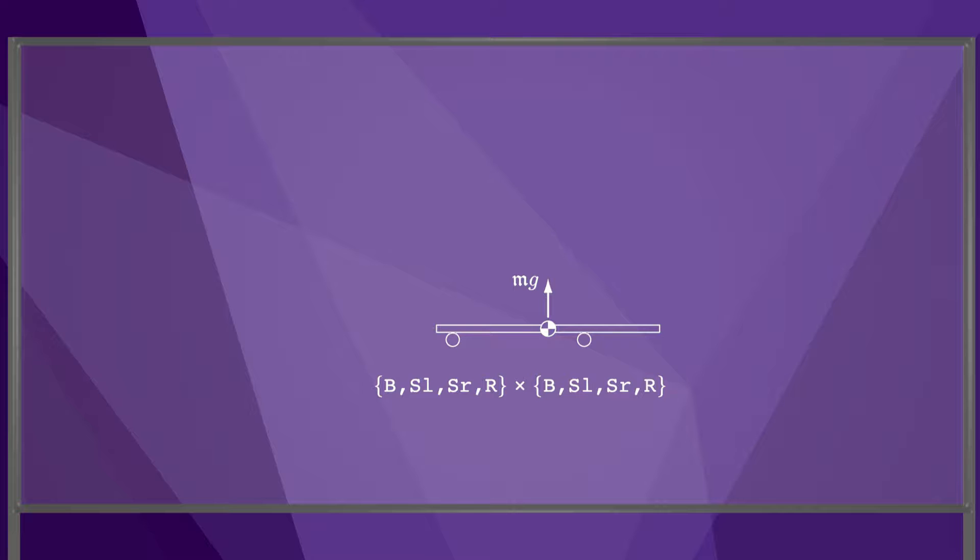For the other contact modes, which are not ruled out solely because of kinematics, we have to undertake a quasi-static force analysis to see if there are possible solutions. As a first example, let's consider the contact mode where both contacts break, the contact mode called BB.